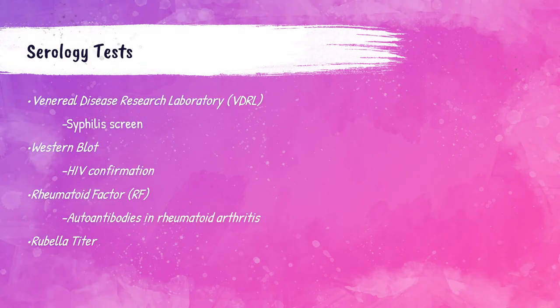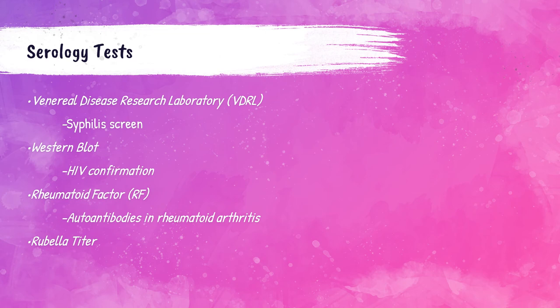The VDRL (venereal disease research laboratory) test is another test for syphilis. The Western blot test is used for confirmation of HIV infection. Rheumatoid factors are autoantibodies tested in patients with rheumatoid arthritis — an autoimmune inflammatory disease that causes the body to attack the joints. Rubella titers determine how much antibody a patient has against rubella (German measles) to assess their immune status after vaccination. Titers are performed for many different antibodies; rubella is just one example.